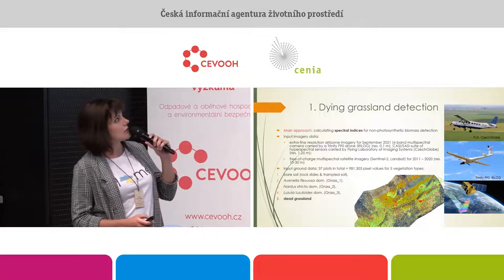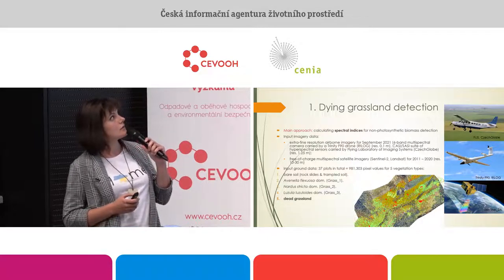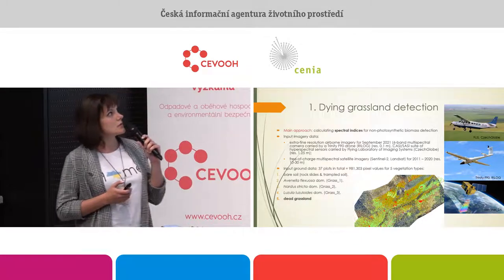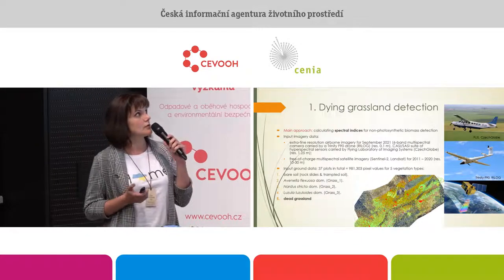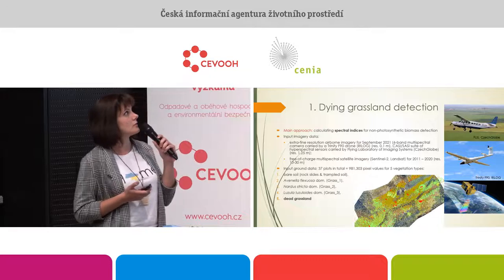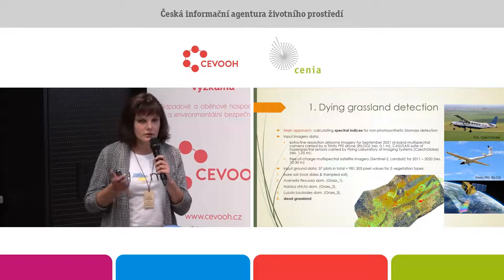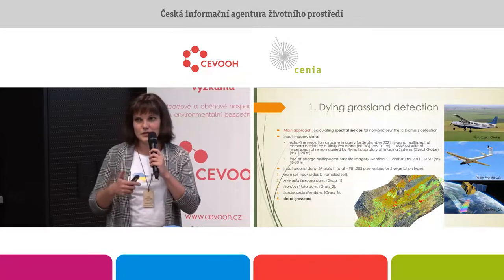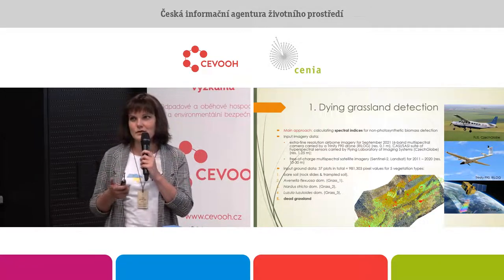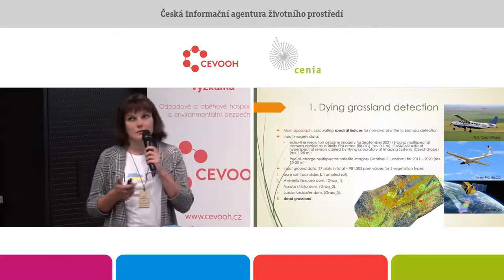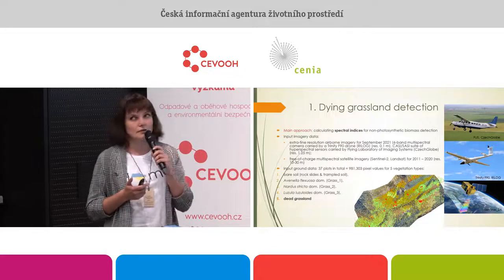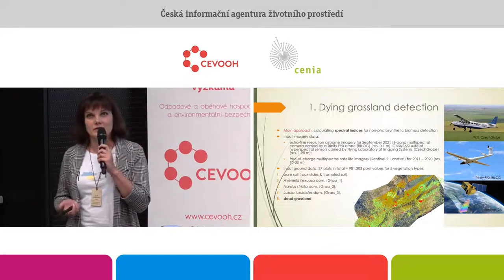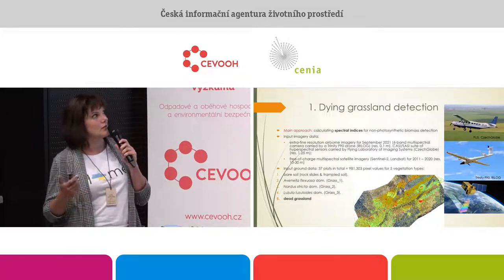Concerning dying grassland detection, the main approach was to calculate spectral indices for non-photosynthetic biomass detection. Spectral indices involve mathematical operations on image bands. Everybody knows NDVI, and we used similar indices but with other bands.